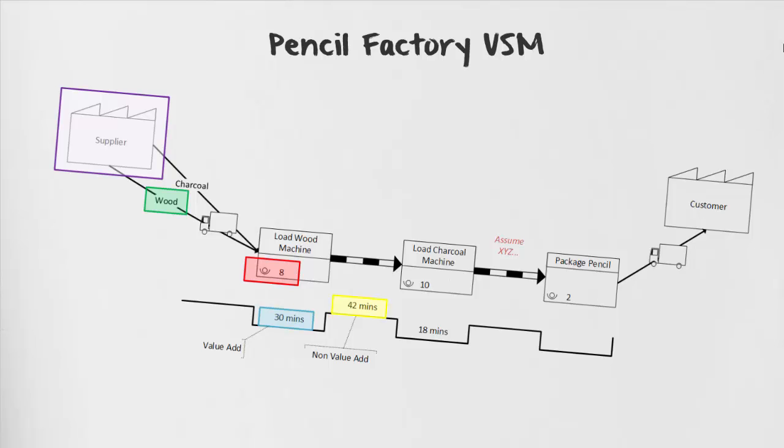Our starting point is where a supplier is going to be providing some type of materials and then our finish point is going to be where the customer receives some form of output. Value stream maps do not need to only have one start and one finish point as well. There could be multiple suppliers as well as multiple customers. However, for our example today, we wanted to keep it simple.